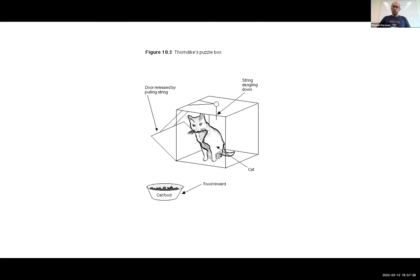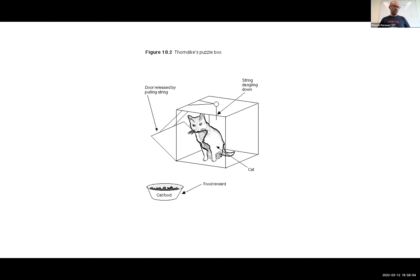This is Thorndike. Thorndike's famous experiments on cats are really at the core of reinforcement learning ideas in psychology. He built a box where you put a cat inside and the cat has to pull a string in a particular direction. If it does, the box opens and it can get food. It's not so simple to figure out exactly how to pull the string. People who came into his office would see this cat pull the string immediately, get out, and eat the food — and say, 'Wow, that's a really smart cat.'